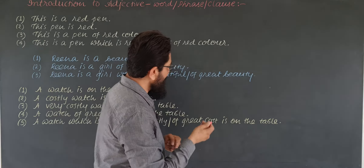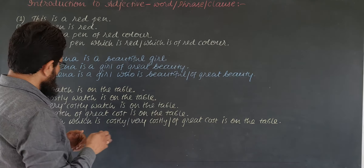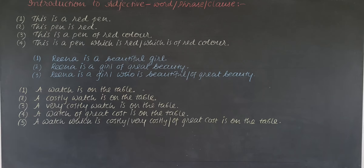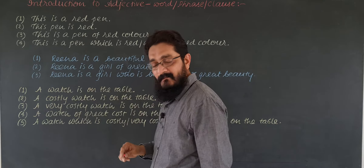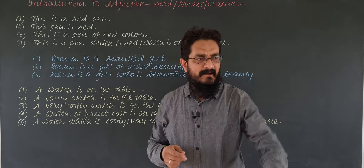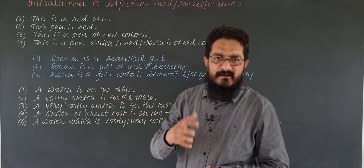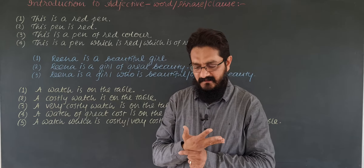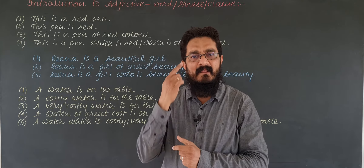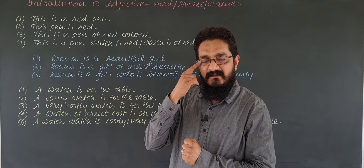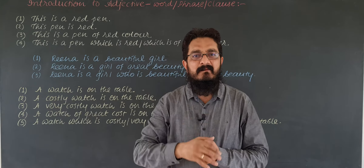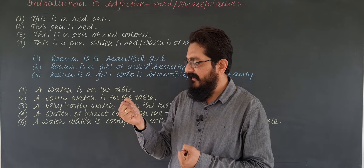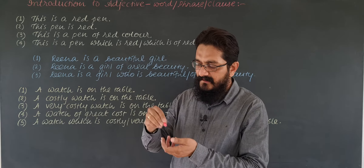There are some examples given. Now read the first sentence: 'This is a red pen.' Do you know what is a pen? Pen is a noun. And you all know, we have got five senses. The first one is eyes — whatever we can see with our eyes is largely a noun. Touch — whatever we can touch with our hands is largely a noun.